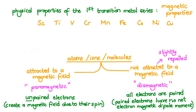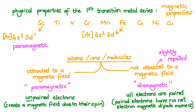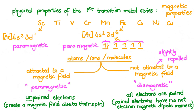Looking at scandium's electronic configuration, the two 4s electrons are paired with each other, but the lone 3d electron has no partner — it is unpaired. So an atom of scandium is paramagnetic. For iron, the two 4s electrons are paired, but placing the six 3d electrons into the five orbitals of the 3d subshell shows that 2 of the electrons are paired and 4 are unpaired. So an atom of iron is paramagnetic and to a larger degree than scandium because it has more unpaired electrons.